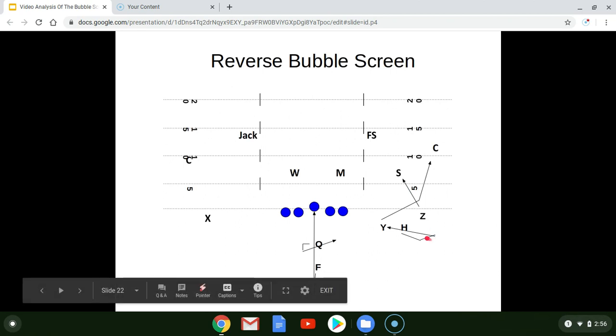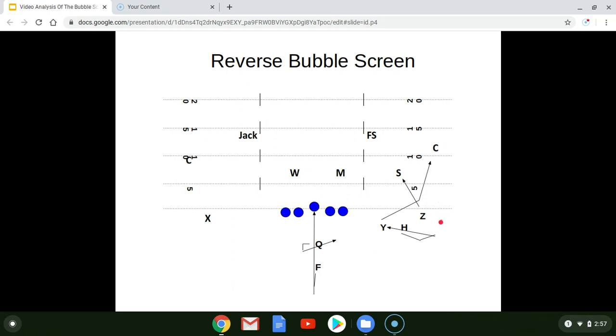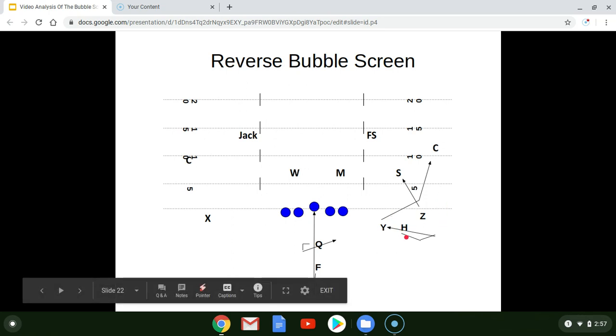And then we are coming back inside on the tunnel at that point, almost like a jailbreak screen or tunnel screen, where an outside receiver will take three steps upfield, one, two, three, and then come back for the ball behind the line of scrimmage. The H is going to do something similar to that,